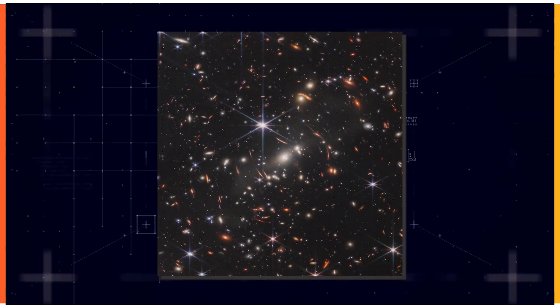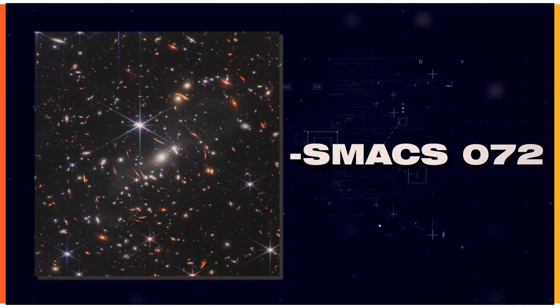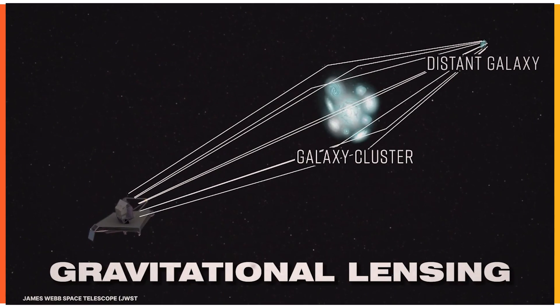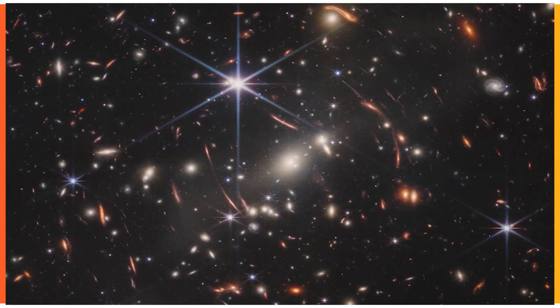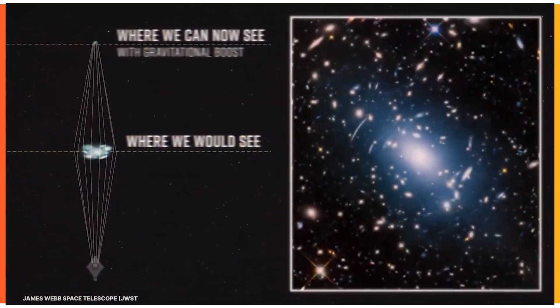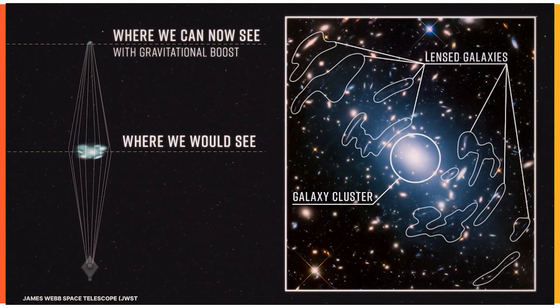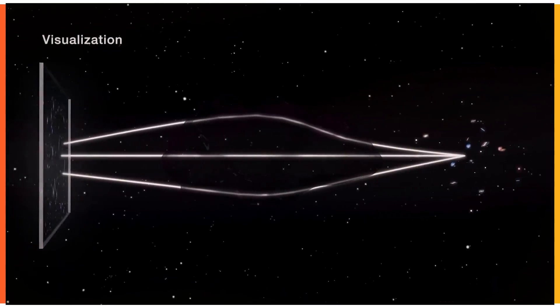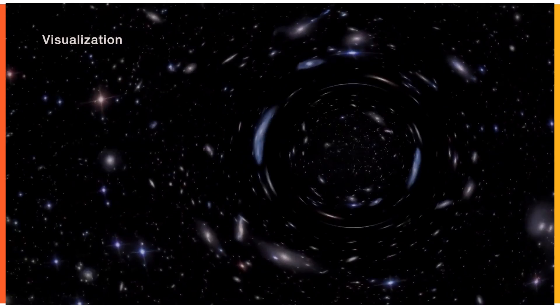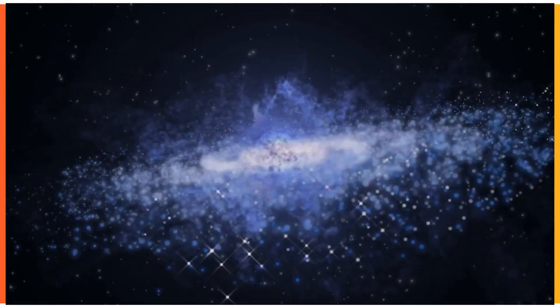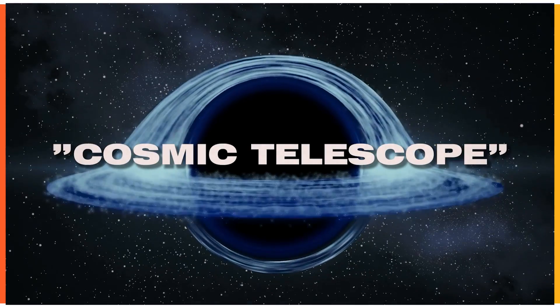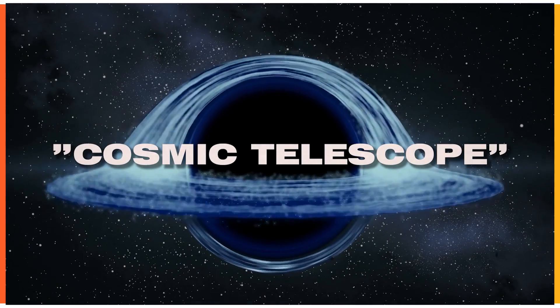This galaxy cluster, called SMACS-072, is made visible with one of the telescope's features known as gravitational lensing. The most eye-catching part of the image is the center, where we can see the elliptical galaxy in the middle, and the smaller white galaxies dotted around it. They're bound together in a huge cluster by gravity, where they bend light from the galaxies light-years behind them. This combined mass of galaxies and dark matter acts as a sort of cosmic telescope, which magnifies individual galaxies.